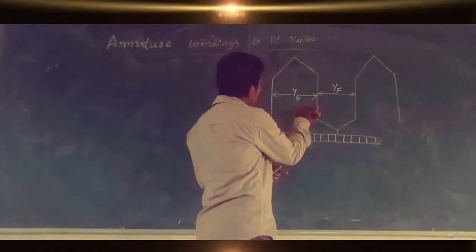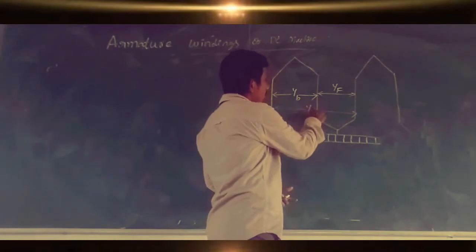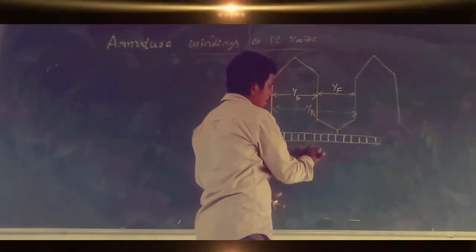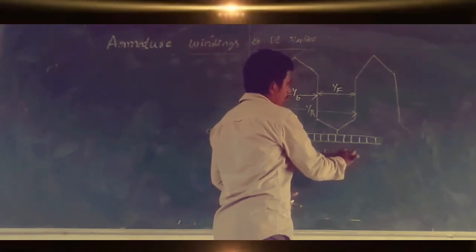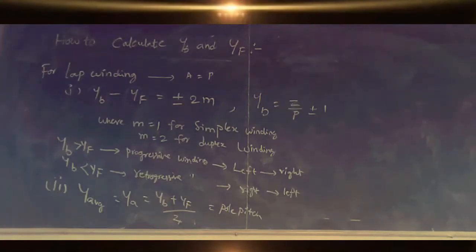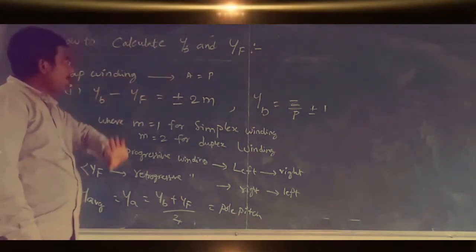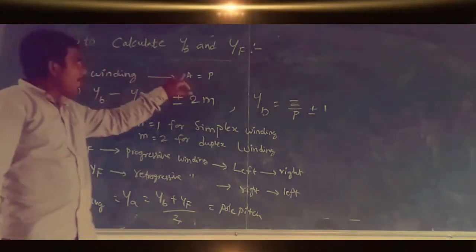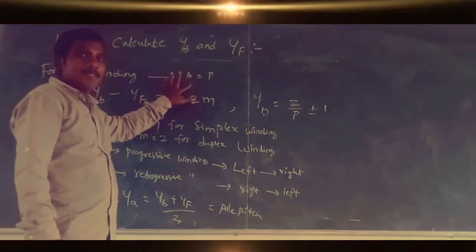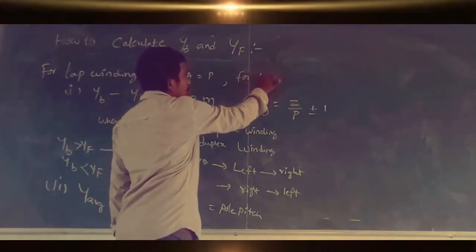For lap winding, the number of parallel paths equals the number of poles — that is, A equal to P. The parallel paths in lap winding always equal the number of poles: A = P. For wave winding, the number of parallel paths equals 2: A = 2. Wave winding is used for high voltage purposes only, and high voltage is generated by wave winding.